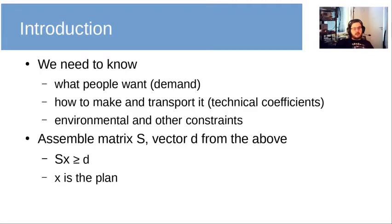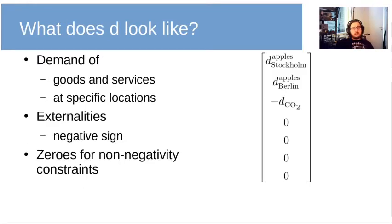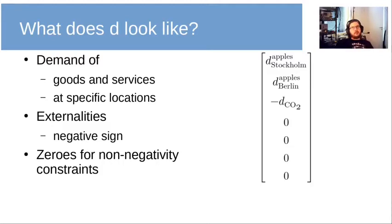What do S, x, and d look like? First, d is a vector of demand for goods and services at specific locations. On the right we can see the demand for apples in Stockholm, the demand for apples in Berlin, and also a demand for carbon dioxide which is negative — this is how we formulate externalities, using a less-than-or-equal inequality for these things. Finally we have a bunch of zeros for non-negativity constraints, because we cannot use negative amounts of labor in any industry.